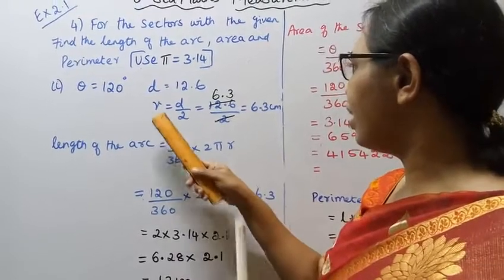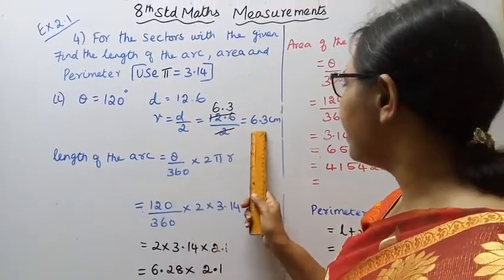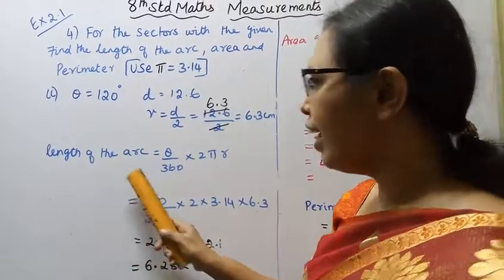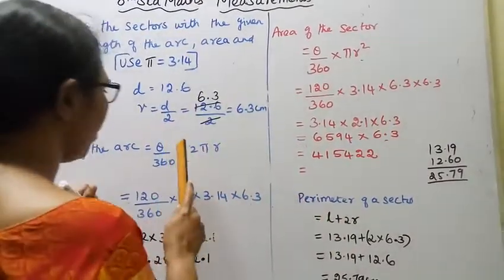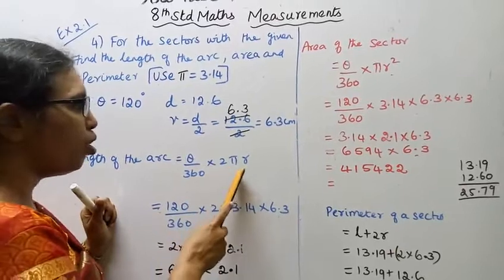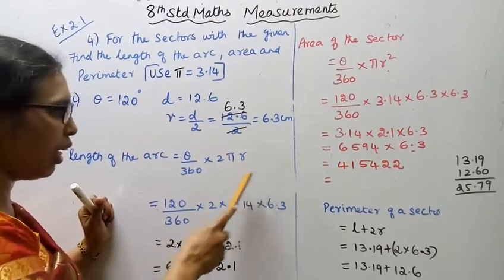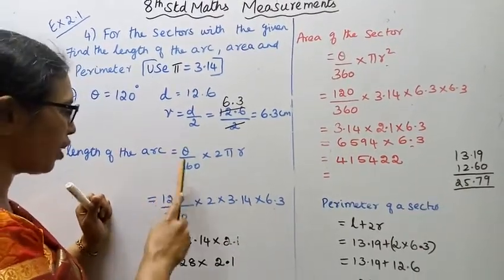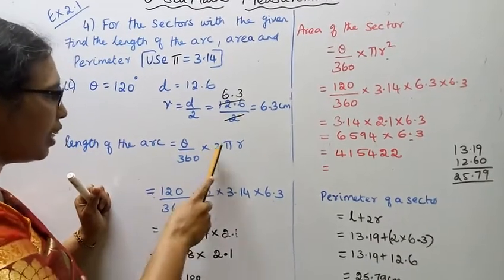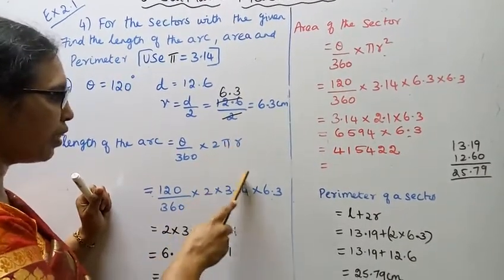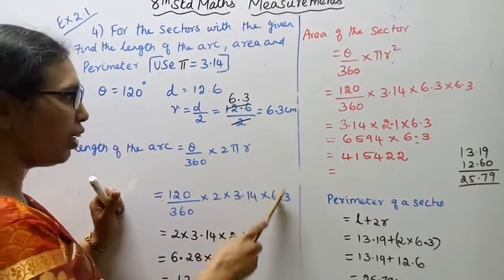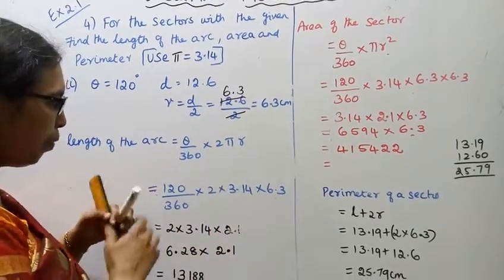Now for the length of the arc, the formula is theta divided by 360, into 2 pi r. So length of arc equals 120 by 360, into 2 times pi times 3.14, and r is 6.3. Now we cancel the zeros.